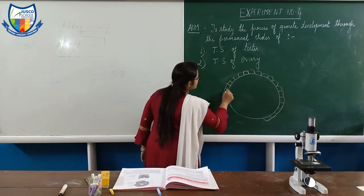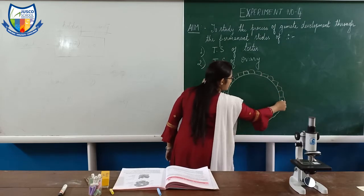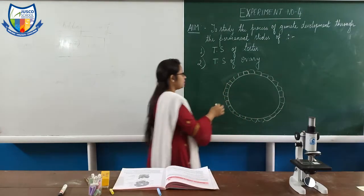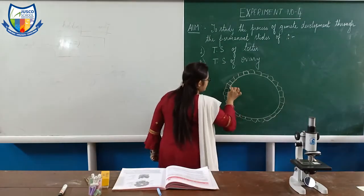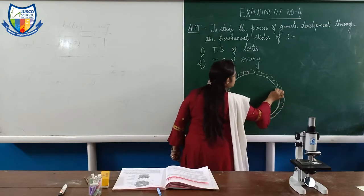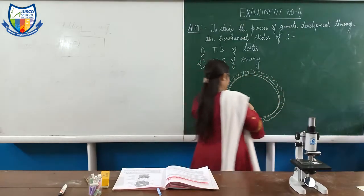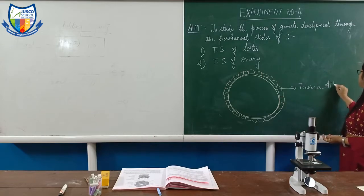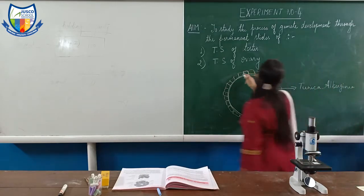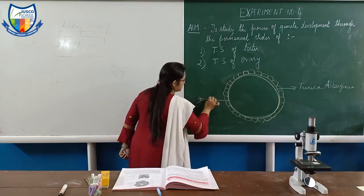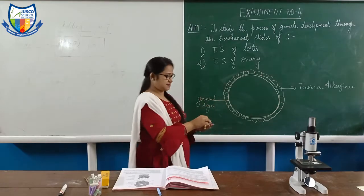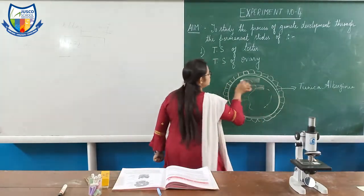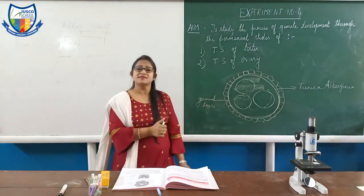They rest on a thin layer which is called as tunica albuginea. This second layer is called as tunica albuginea. Inside this, you will find interstitial tissue and three to four lobules, which are called as seminiferous tubules.